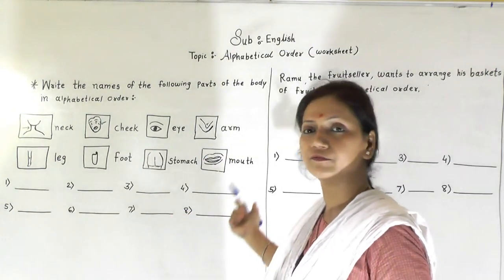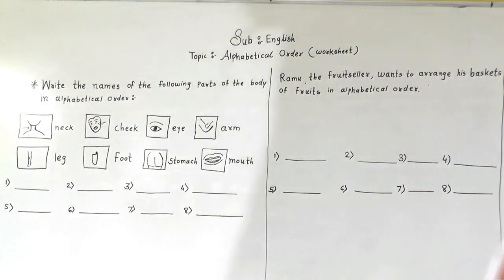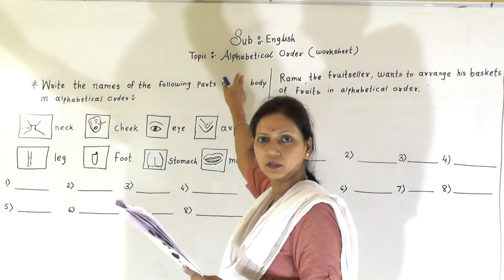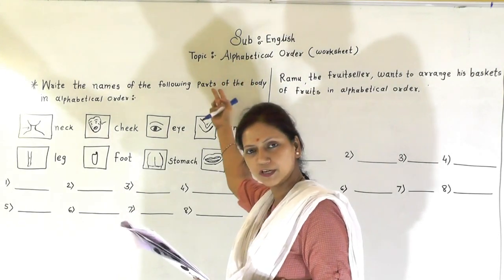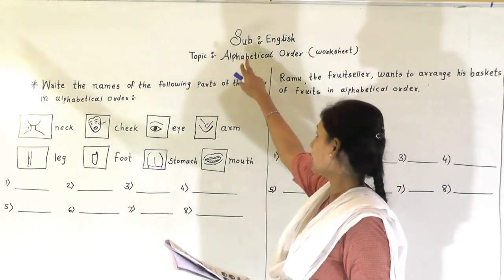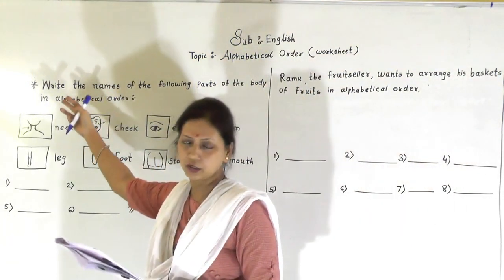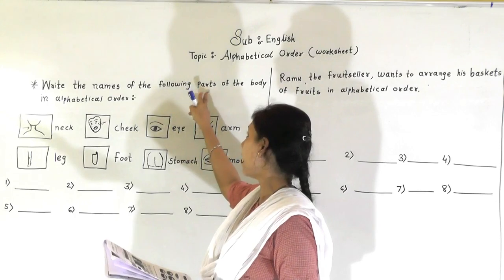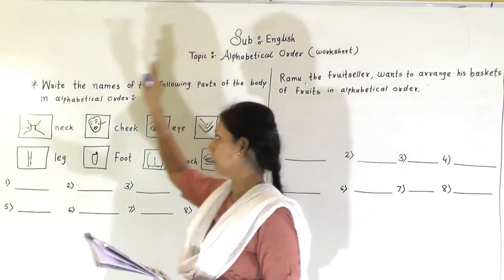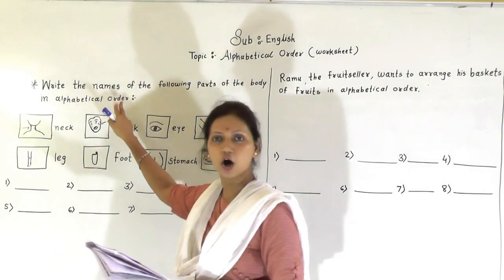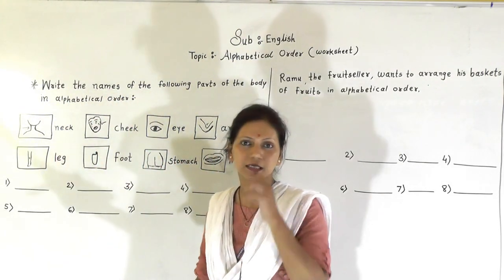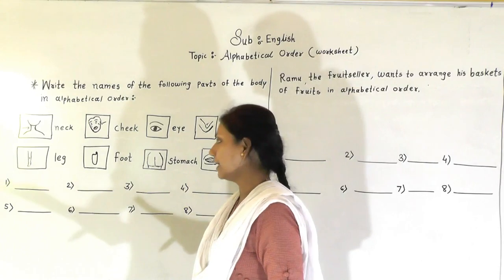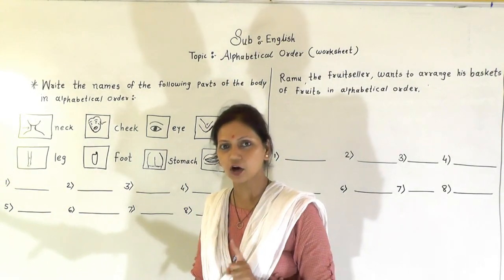So our second worksheet is alphabetical order. That already we have learnt in a video. I explain everything in detail. Again I am going to explain for you. So topic name is alphabetical order and the question or instruction: Write the names of the following parts of the body in alphabetical order. So let's start. As I told you how to arrange the words in an alphabetical order, for that you have to see the first letter of the word.